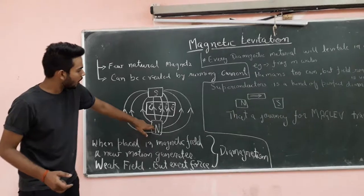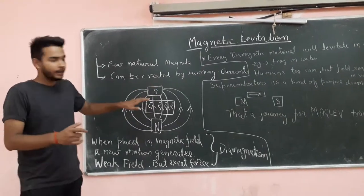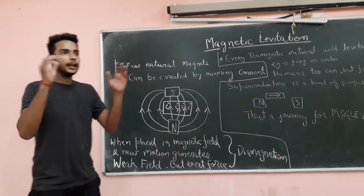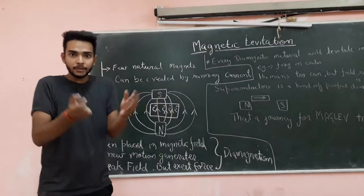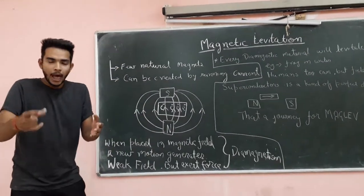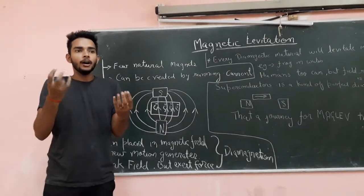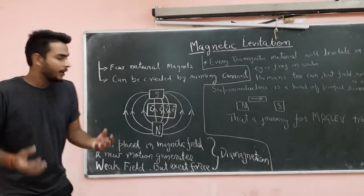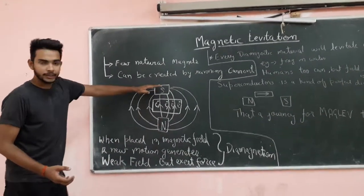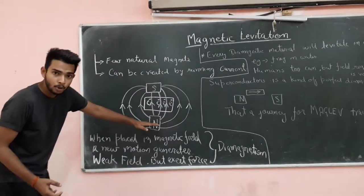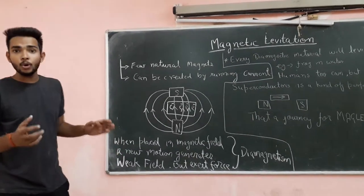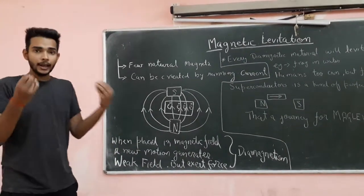See here, if a North Pole and South Pole magnet is there and if you are placing an object in between this, all the electrons inside that object will continue to move in a particular direction. And that will create a magnetic field in that. And the object will move from one place, that is from North Pole to South Pole. So when placed in a magnetic field, a new motion starts in electrons.